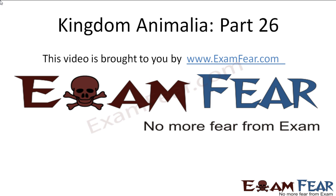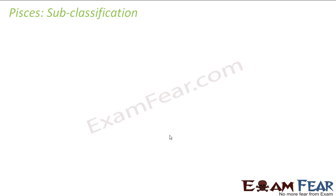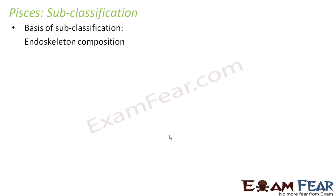This video on Kingdom Animalia part 26 is brought to you by examfear.com. Since we have so many different varieties of fishes, it became important to subclassify the Pisces. This subclassification was based upon the endoskeleton composition — the composition of the skeleton was different in different types of fishes.